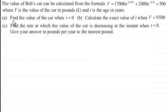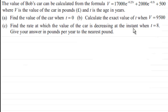In part A we've got to find the value of the car when t equals zero. Then in part B, calculate the exact value of t when V equals 9,500. And in part C, find the rate at which the value of the car is decreasing at the instant when t equals 8, giving the answer in pounds per year to the nearest pound.